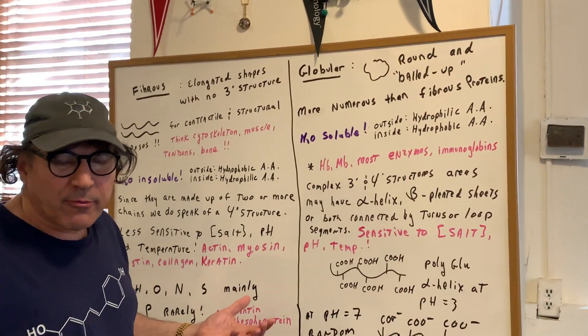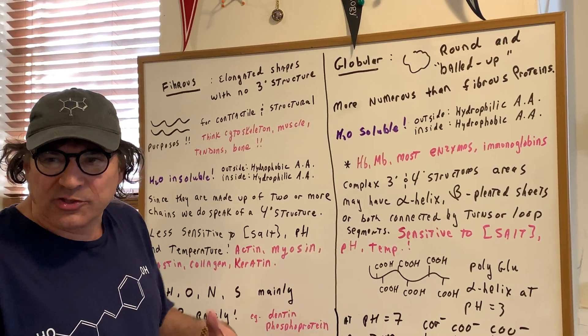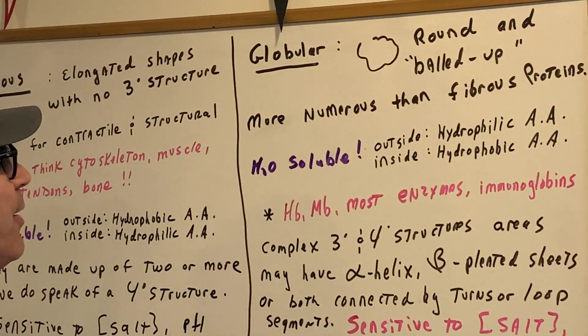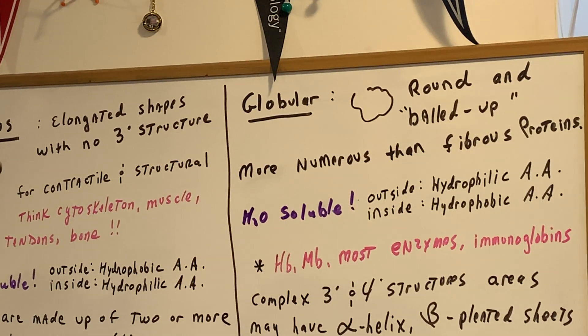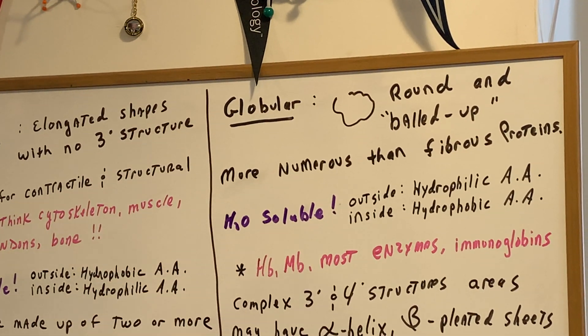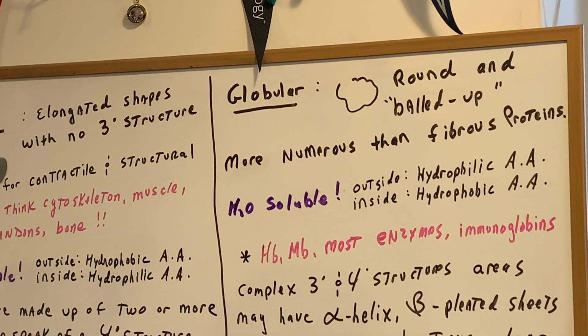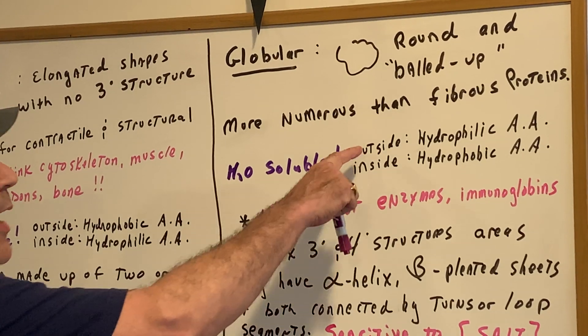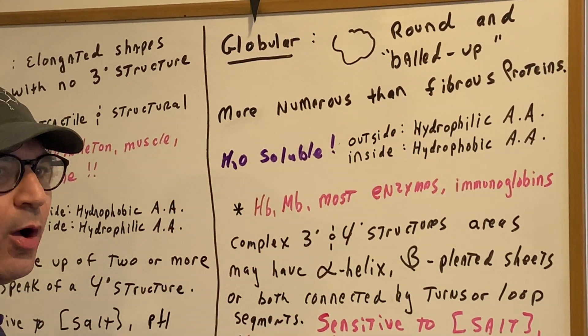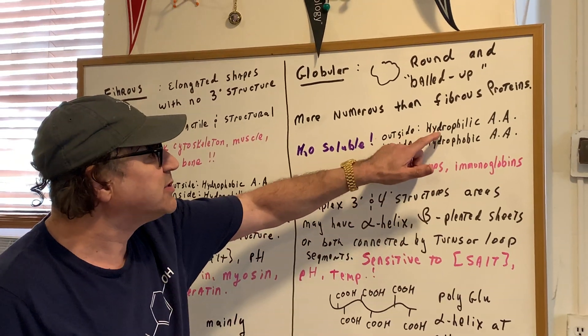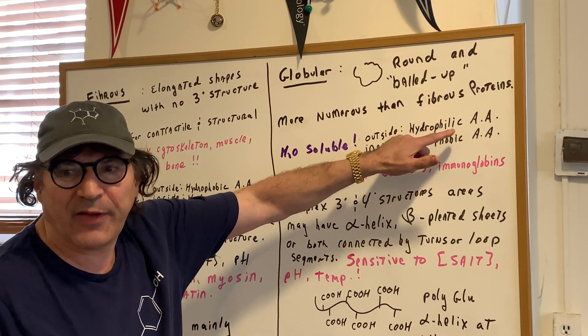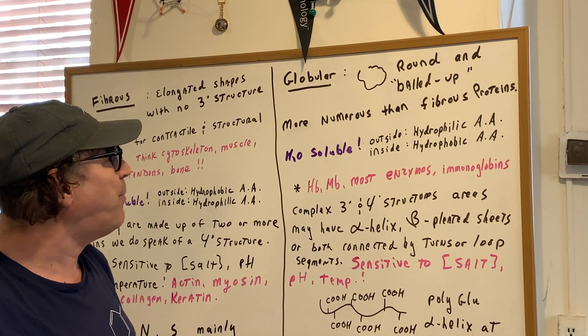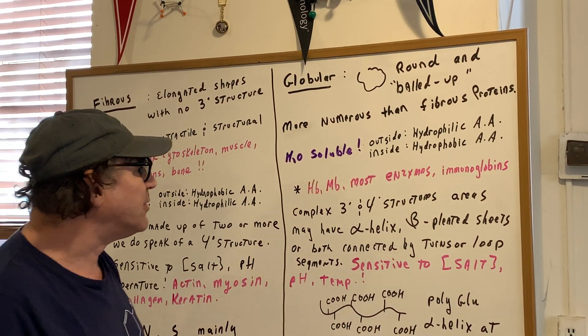Globular proteins - the way I remember it is glob, like a glob of gum, it's all balled up. So as you can see, it's round and balled up. They're more numerous than the fibrous proteins. If it's a globular protein, it's very numerous. Water soluble. So when I think of water soluble, that means that the outside of the molecule would be consisting of hydrophilic amino acids. The inside would be hydrophobic.